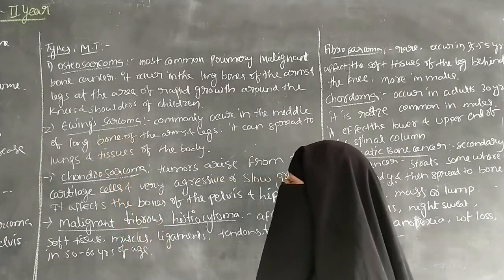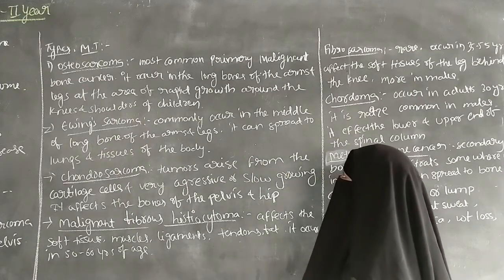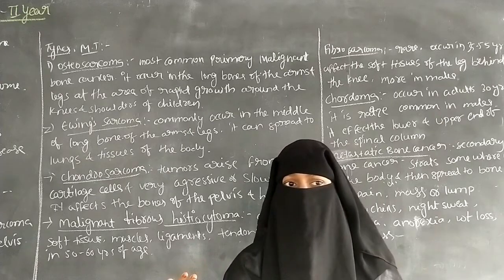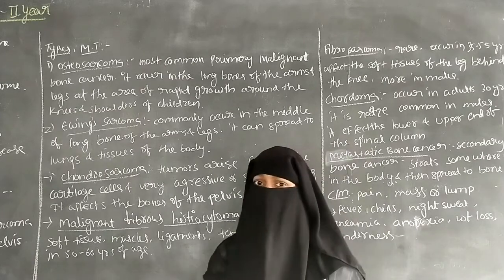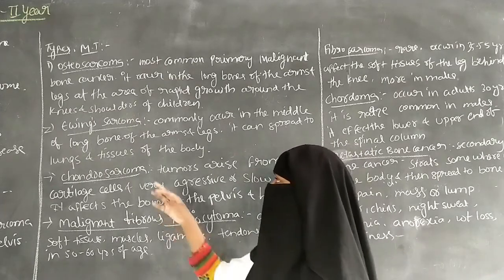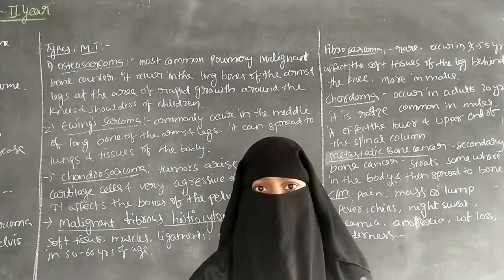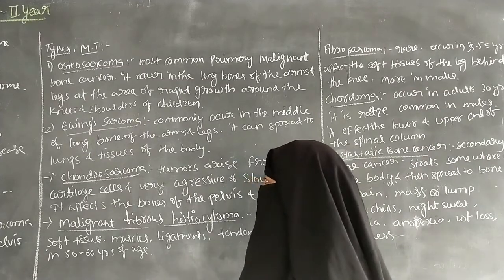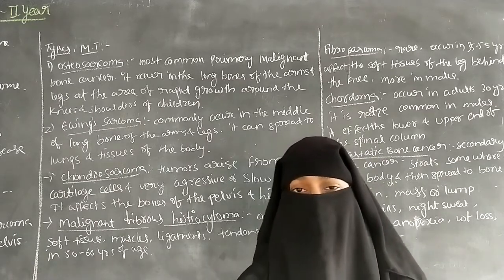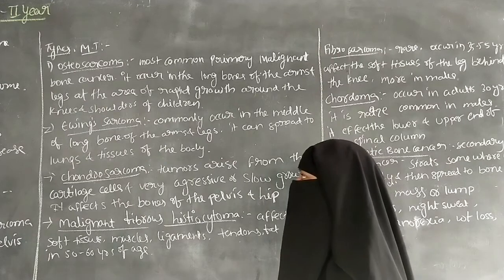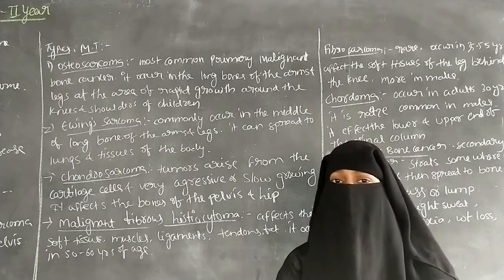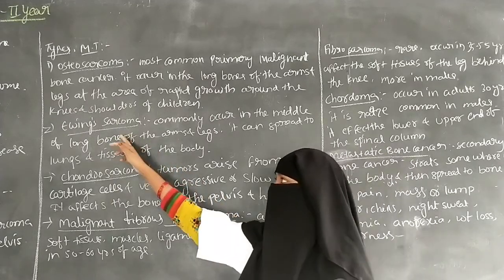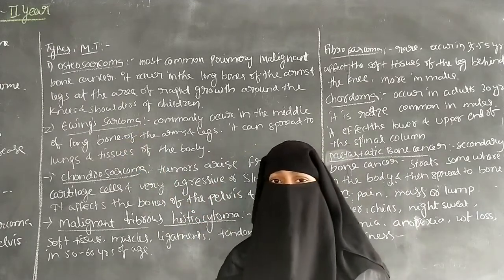The next type of malignant bone tumor is Ewing sarcoma. It commonly occurs in the middle part of the long bones — that is, the arm bones and leg bones — and can spread to the lungs and tissues of the body.